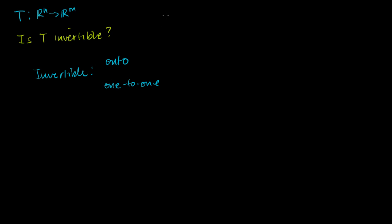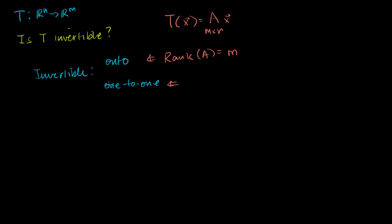If we have a linear transformation defined by a matrix A — where A is an m by n matrix — the onto condition is met only if the rank of A equals the number of rows, which equals m. And in the last video, we showed the one-to-one condition is only met if every column vector is linearly independent, meaning they are all basis vectors for the column space, or that the rank of A equals n.